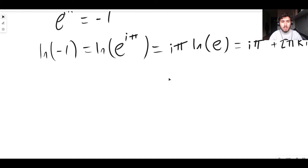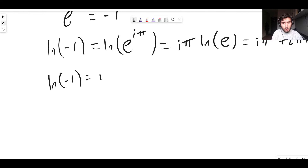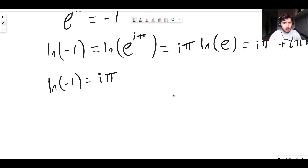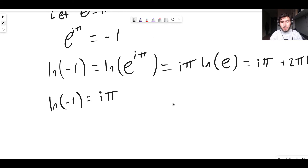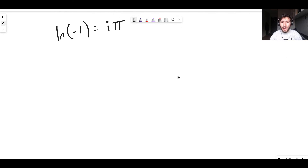So the natural log of minus 1 is equal to i times pi, where i is the square root of minus 1. Very strange! And this is just the principal value, but it opens the door to finding the natural log of any negative number.